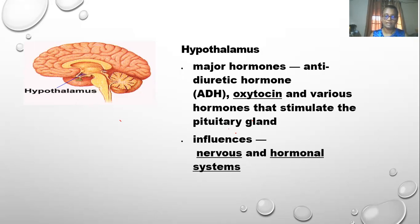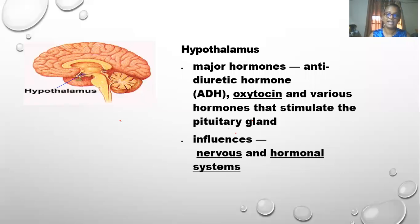The major hormone stories of the hypothalamus are antidiuretic hormone (ADH), oxytocin, and various hormones that stimulate the pituitary glands. What it influences is the nervous and hormonal system — that is what the hypothalamus is responsible for.